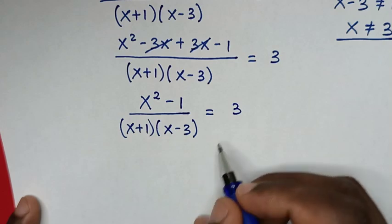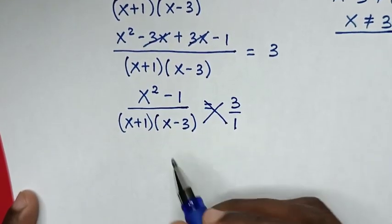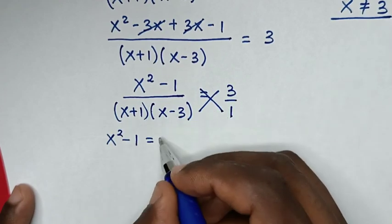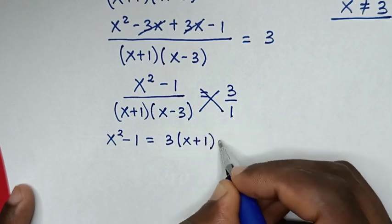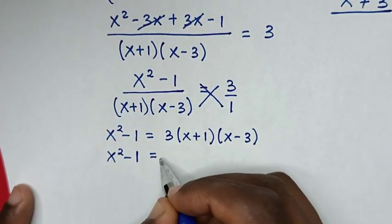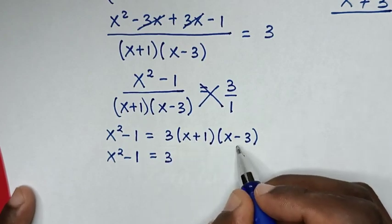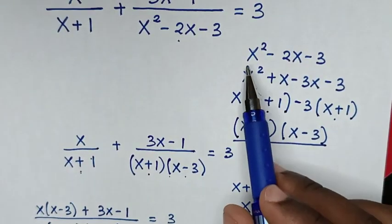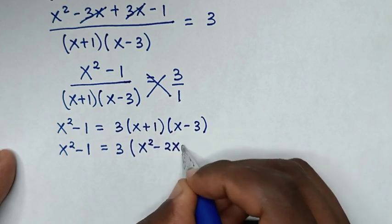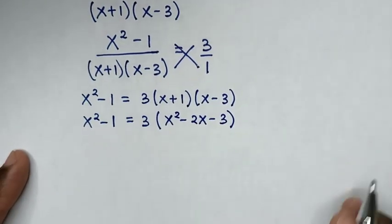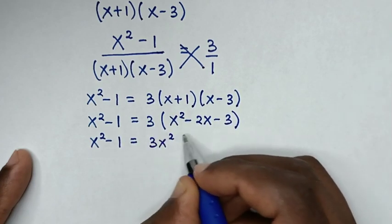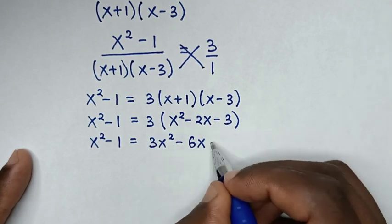The 3 on the right is the same as 3 over 1, so we cross-multiply. It will be x squared minus 1 equals 3 times (x plus 1)(x minus 3). Expanding (x plus 1)(x minus 3) gives the same quadratic x squared minus 2x minus 3, so the right side becomes 3(x squared minus 2x minus 3), which is 3x squared minus 6x minus 9.